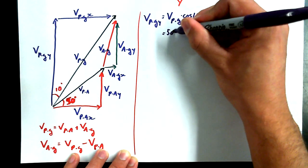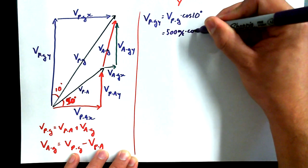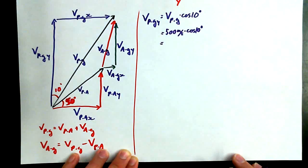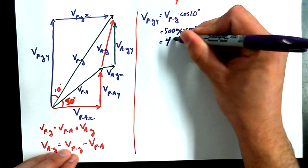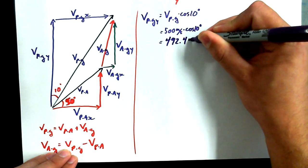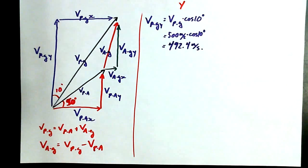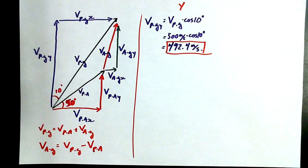Anyway, VPGY is equal to VPG times cosine of 10 degrees. And that'll be 500 meters per second times cos of 10. And I got some people that claim that they're being quick on the calculator today. That's the claim. What's 500 cos of 10? Yeah? 492.4. 492.4. Thank you. 492.4 meters per second. Okay. I'm going to put a red box around it. I think I'm in love with that value.